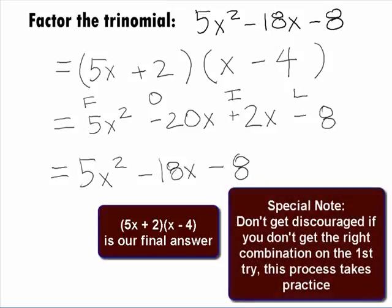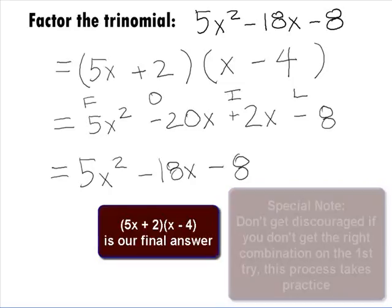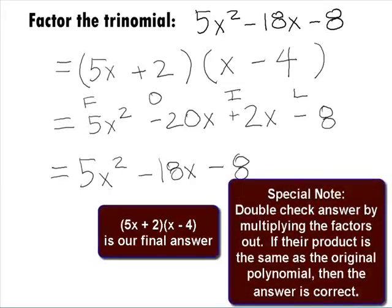Don't get discouraged if you don't get the right combination on the first try. This process takes some practice. After a while, you will get used to it and be able to do it efficiently. We can always double check ourselves on factoring problems by multiplying out the factors that we have. If they multiply to be the original polynomial, then we have the right factors. If they don't, we need to go back and try factoring the problem again.